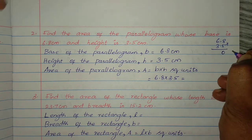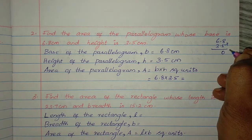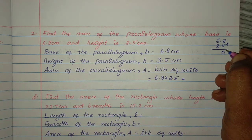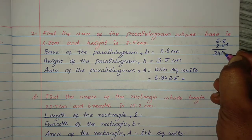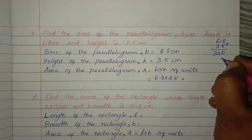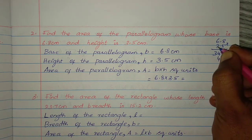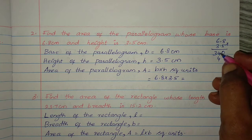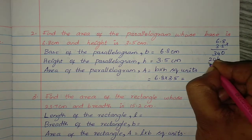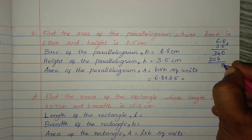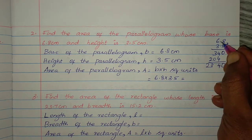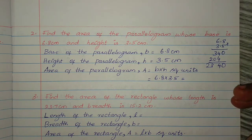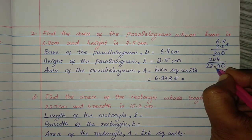Multiplying 6.8 × 3.5: 8 fives are 40, carry 4; 6 fives are 30 plus 4 = 34. Then 3 eights are 24, carry 2; 6 threes are 18 plus 2 = 20. Result digits: 0, 4, 3, 2. Decimal: 1 digit after decimal here, 1 digit after decimal there — so place decimal point 2 digits before.